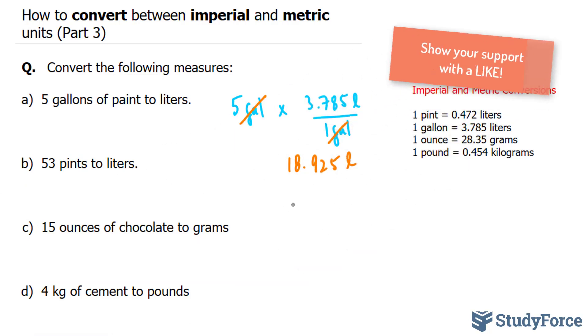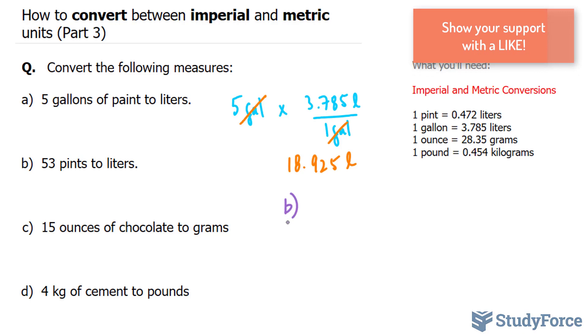Let's move on to B. And I'll do B over here. This time, they want us to go from 53 pints to liters. Now, the conversion ratio for that is shown right here. And I'm going to use the version where the pints is at the bottom and the liters is at the top, 0.472 liters.